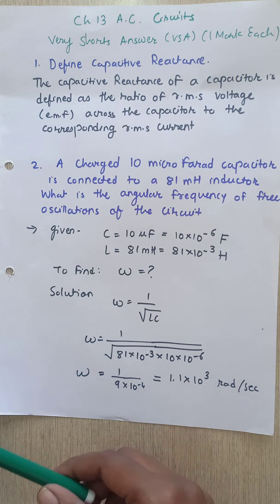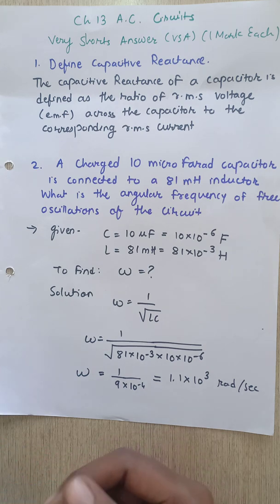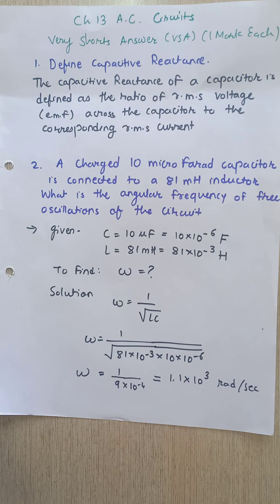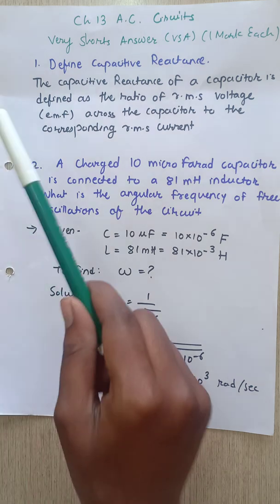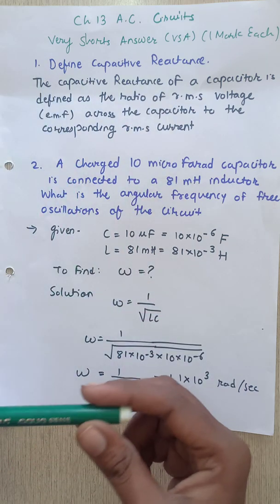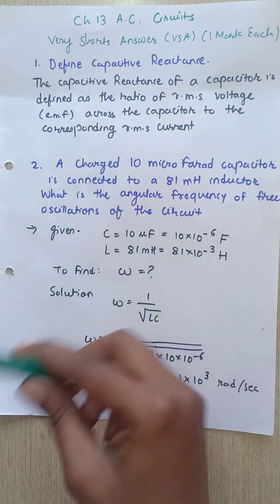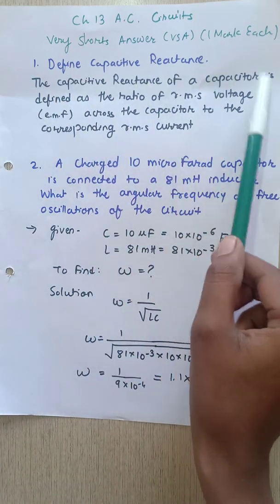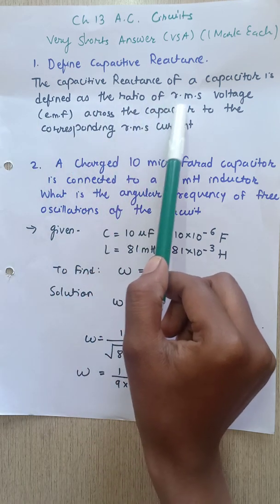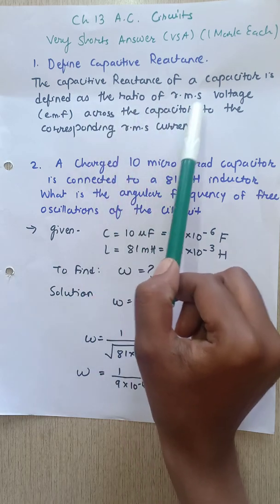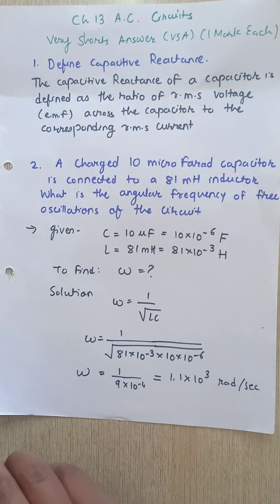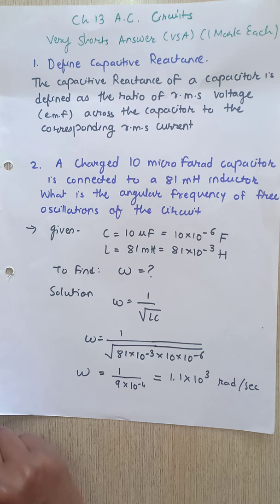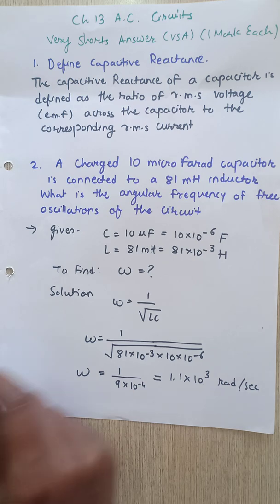The first question is: define capacitive reactance. When we have only a capacitor and the AC supply, that circuit will be purely based on capacitance. The capacitive reactance of a capacitor is defined as the ratio of RMS voltage across the capacitor to the corresponding RMS current.